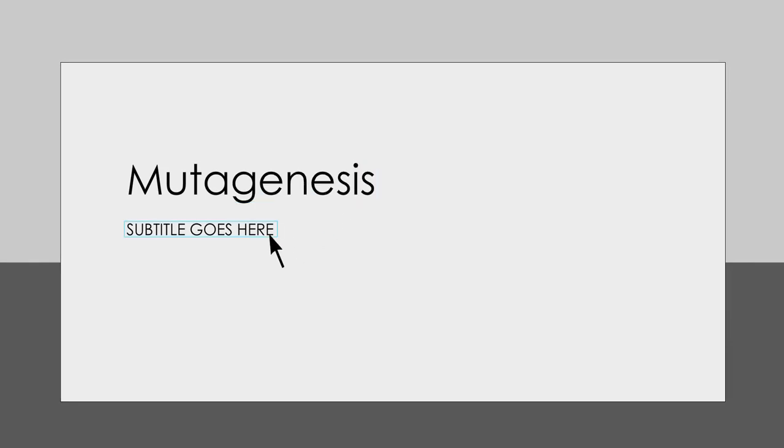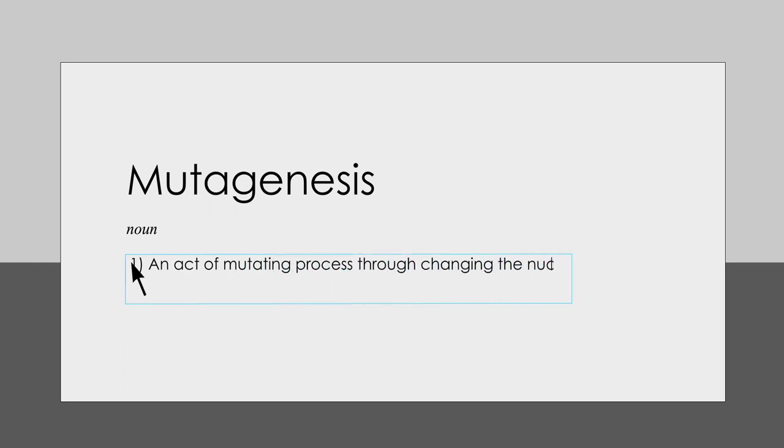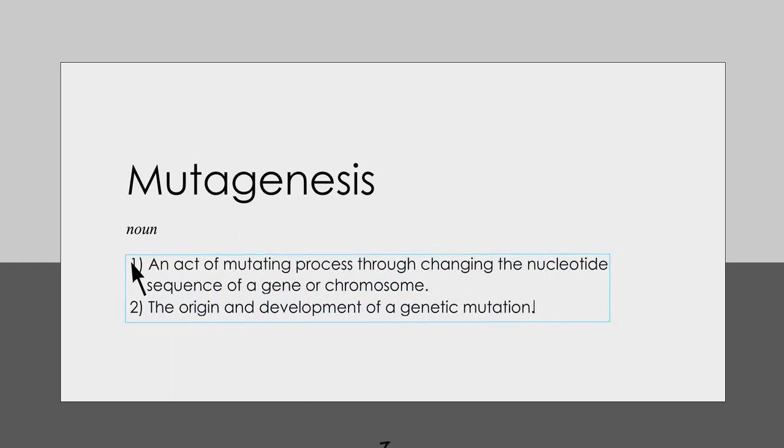Mutagenesis. Noun. 1. An active mutating process through changing the nucleotide sequence of a gene or chromosome. 2. The origin and development of a genetic mutation.